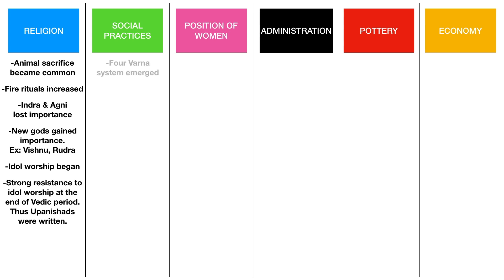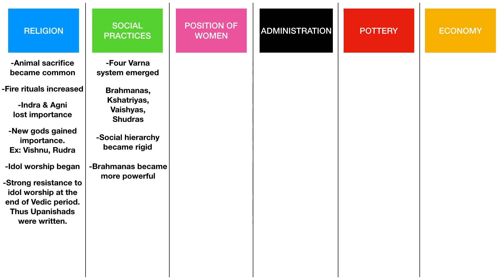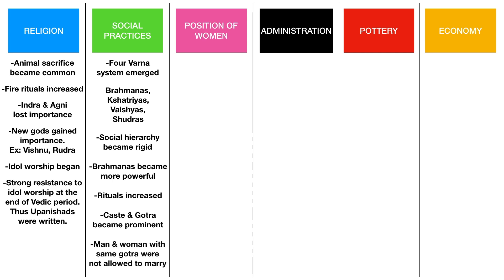Coming to social practices during the later Vedic phase, the four Varna system emerged. The hierarchy goes: Brahmanas at the top, then Kshatriyas, then Vaishyas, then Shudras. Shudras were given less importance and discriminated against. This social hierarchy became rigid during this phase, and the Brahmanas became more powerful, dictating the other three hierarchical groups. Rituals increased and caste and Gotra became more prominent. Men and women with the same Gotra were not allowed to marry, a rule still applicable in India today.